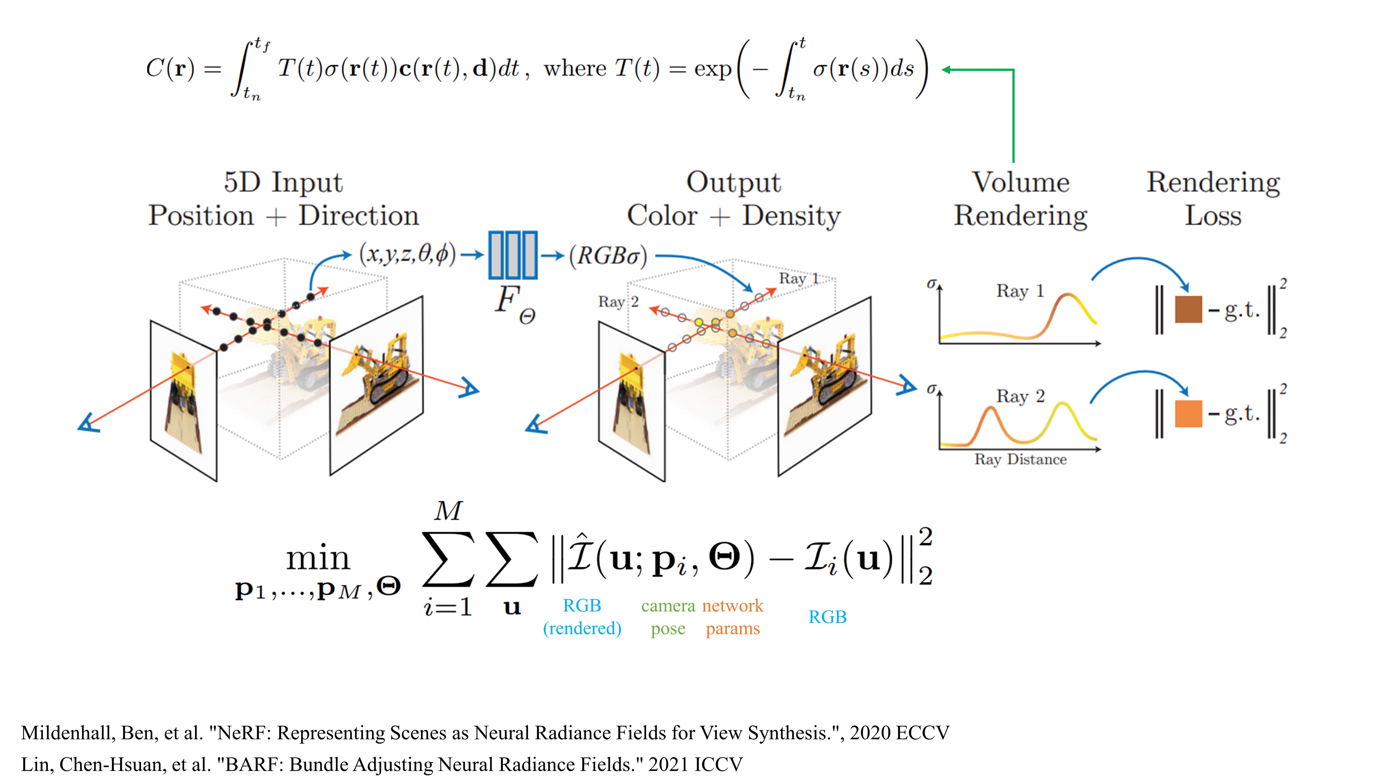The final rendered color of a pixel is calculated by the volume rendering function. To summarize, NeRF optimizes the network parameters by minimizing the photometric loss.